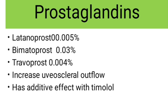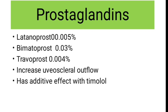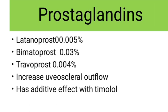The next group of anti-glaucoma medications are prostaglandins. Any of these — latanoprost, bimatoprost and travoprost — all come under the prostaglandin group. You should know the dosages: latanoprost is 0.005%, bimatoprost 0.03%, travoprost 0.004%. These act by increasing the uveoscleral outflow and have additive effect with timolol eye drops. Side effects include conjunctival hyperemia, foreign body sensation, and can increase the pigmentation of the iris.